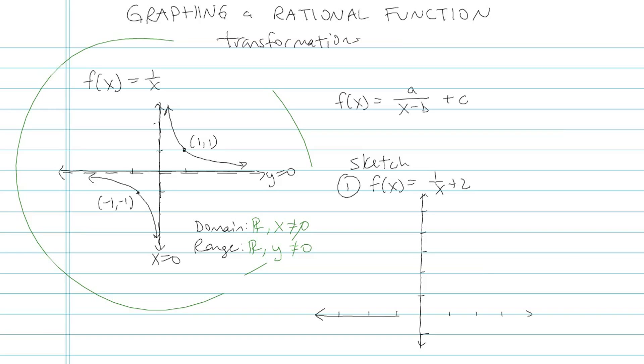What we're going to be doing is taking this parent graph and moving it up and down side to side according to this rule. The number on top represents how tall or skinny your branches is. Sometimes it represents a flip if your a value is negative. Then the next thing we're going to look at on the bottom is a horizontal side to side shift in the opposite direction. And then the c is the up and down. Let's try one.